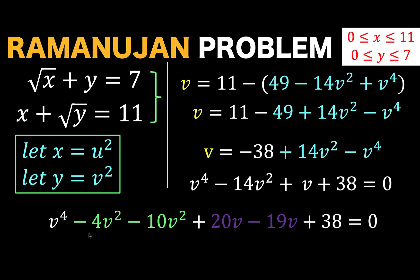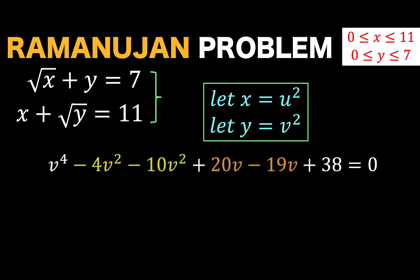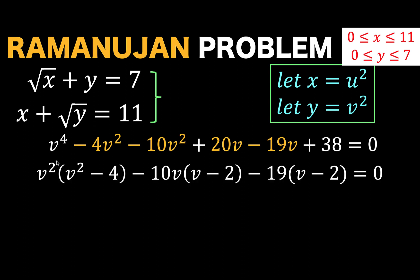Then, group together this v to the fourth and minus 4v squared and factor out the common factor. So, this is now what we arrive at. Common factor here is v squared. Common factor between 10v squared and 20v is 10v. Common factor between 19v and 38 is 19. So, by factoring out those common factors, these are the results.